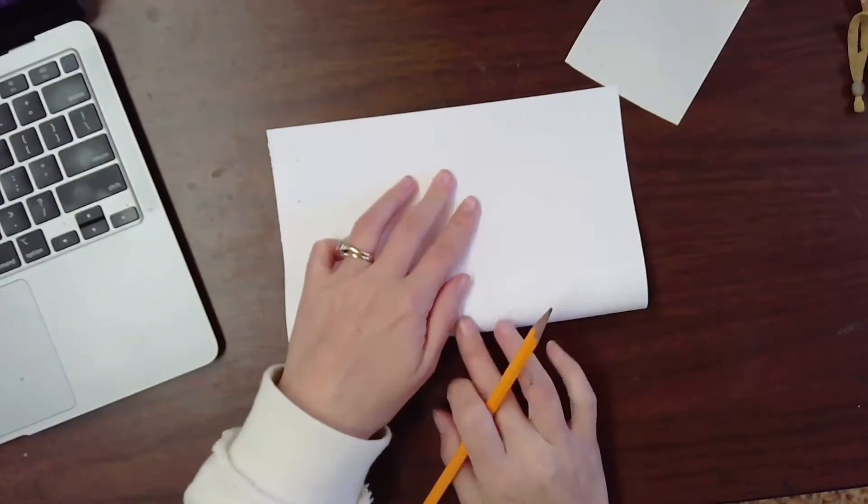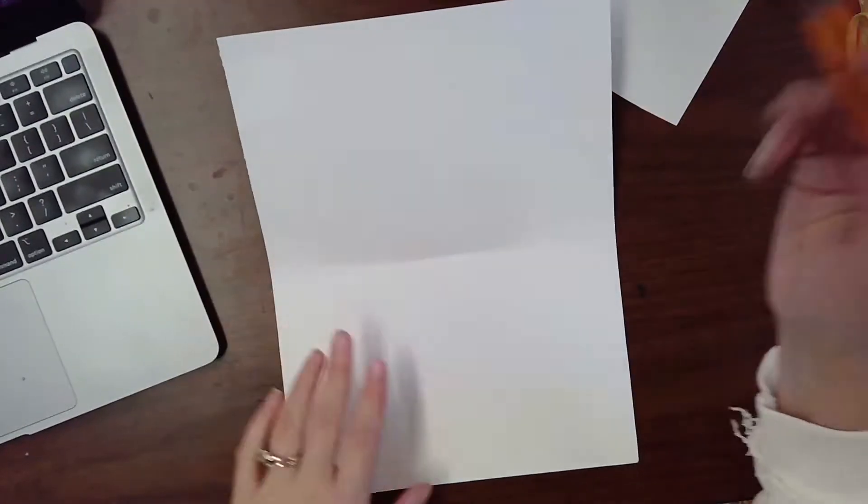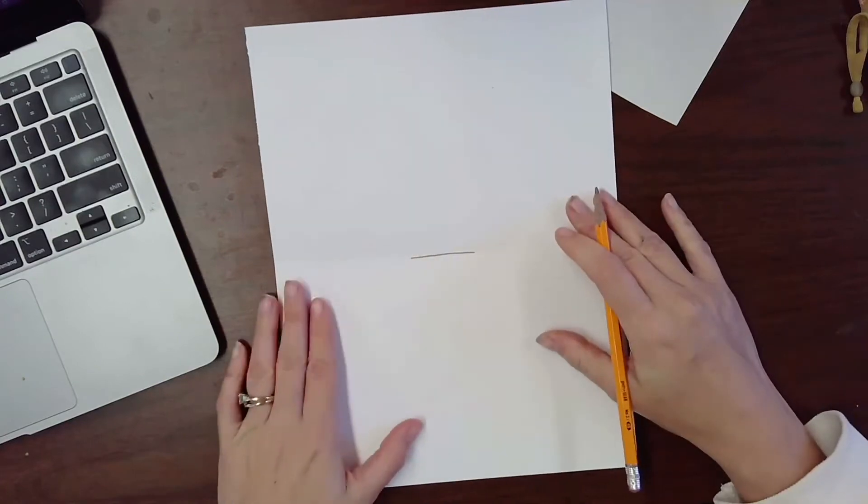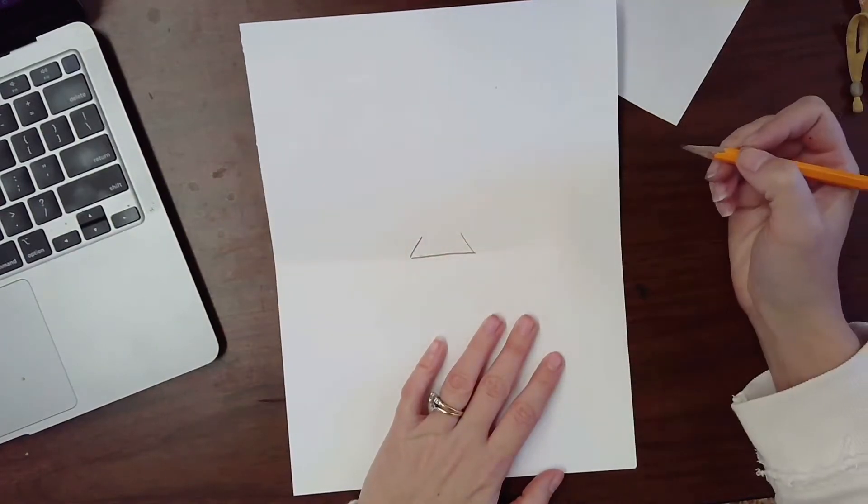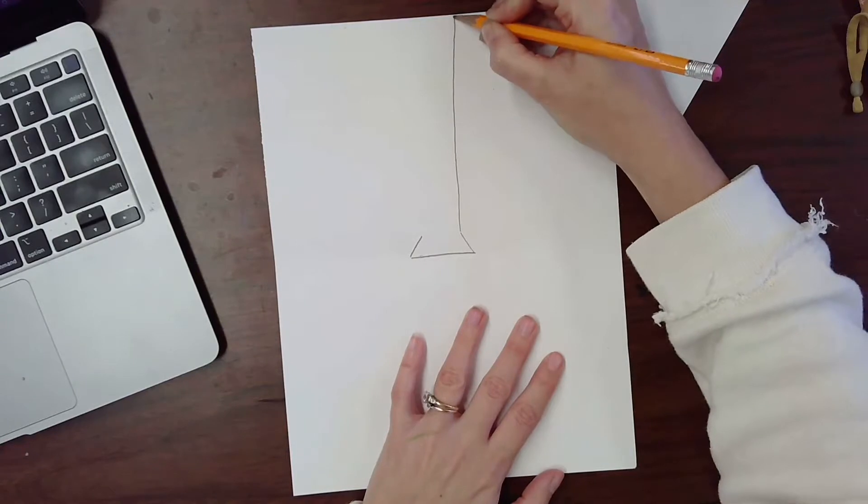Begin by taking the bottom of your paper and folding it to the top and just doing a little crease. You're going to make a little horizontal line there, two little diagonal lines, and then vertical straight lines all the way to the top of the paper. That's going to be the nose.